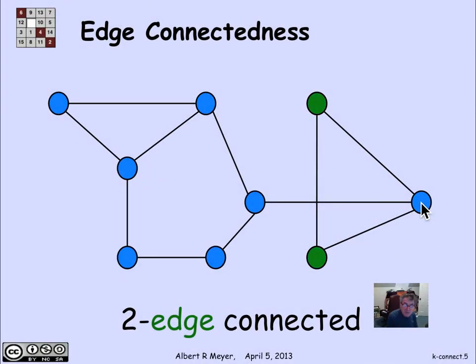Here's an example of two vertices, these two green vertices, that are two edge connected. That means that I can remove any number of edges less than two, which is to say one edge, and they'll stay connected.